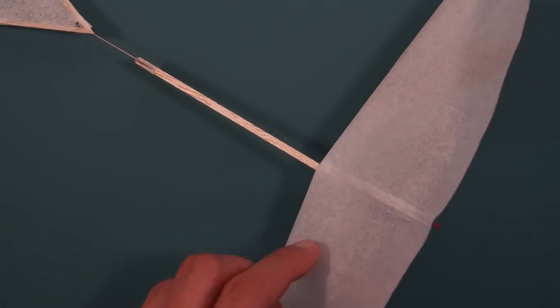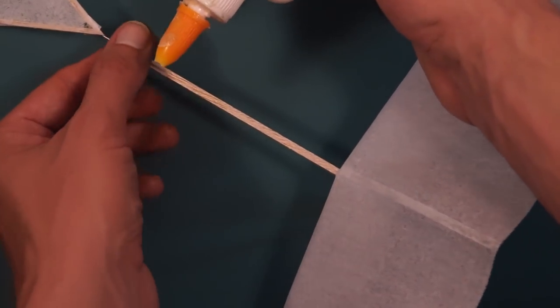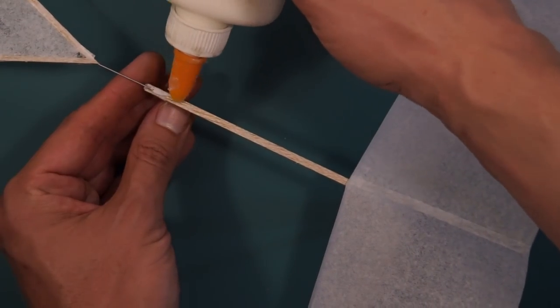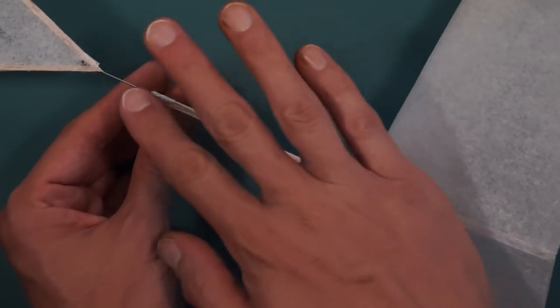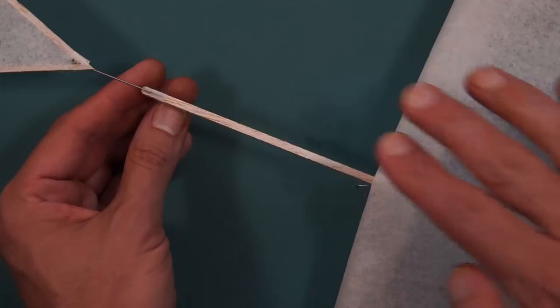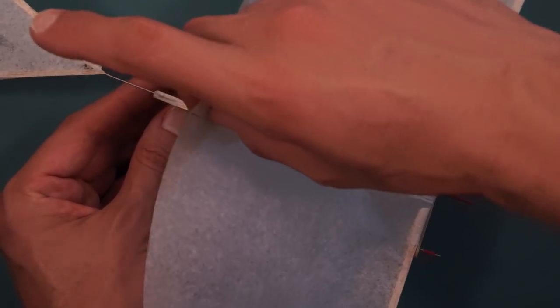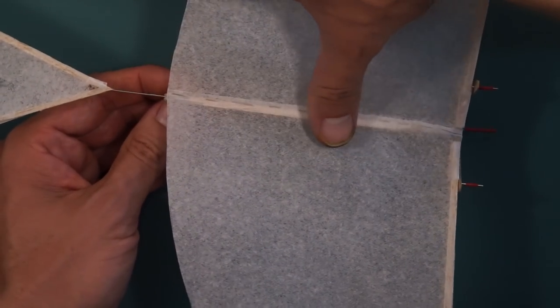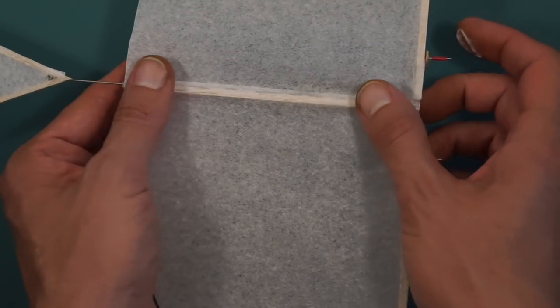We're going to save this part for last which is gluing the tissue to the body or the motor stick. Put the glue along there and here you just let the tissue go down and center itself along the body. That seems to create the best balance between the left and right wings rather than trying to measure it out accurately.